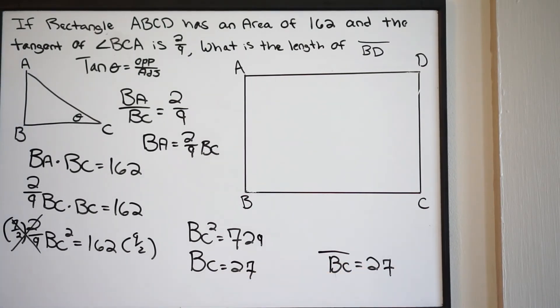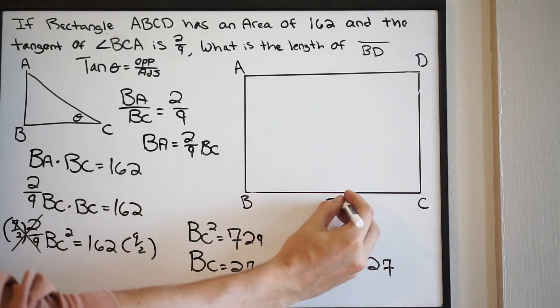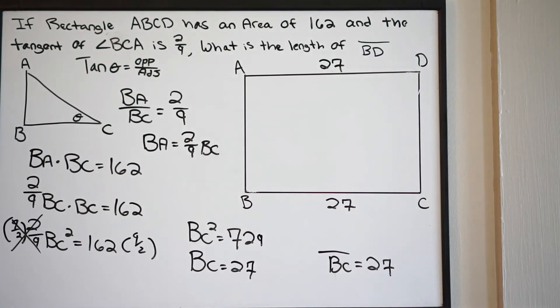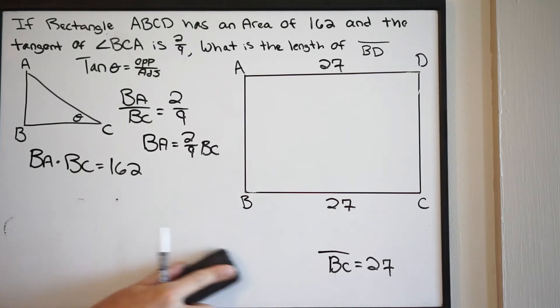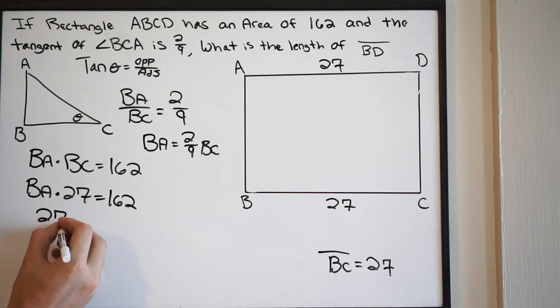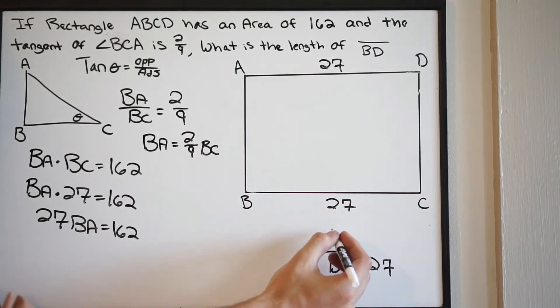So now that we have length BC, we can plug it back into our original equation and solve for length BA. We know that BC is going to be 27. Let's plug it in. We get BA times 27 equals 162. So 27 BA equals 162. We're simply just going to divide both sides by 27. So 162 divided by 27, BA, so length BA is going to be 6.